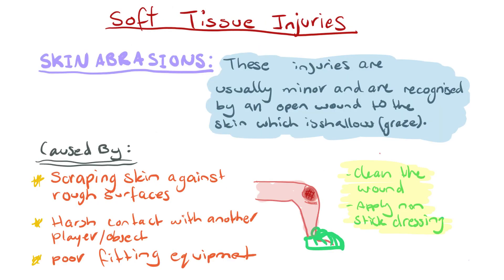Now we move on to soft tissue injuries with management different to RISA. Skin abrasions are usually minor injuries recognised by an open, shallow wound to the skin — like a graze or a small cut. These are caused by scraping skin against rough surfaces, harsh contact with another player or object, or poor-fitting equipment rubbing and causing friction. Treatment involves cleaning the wound and then applying a non-stick dressing.